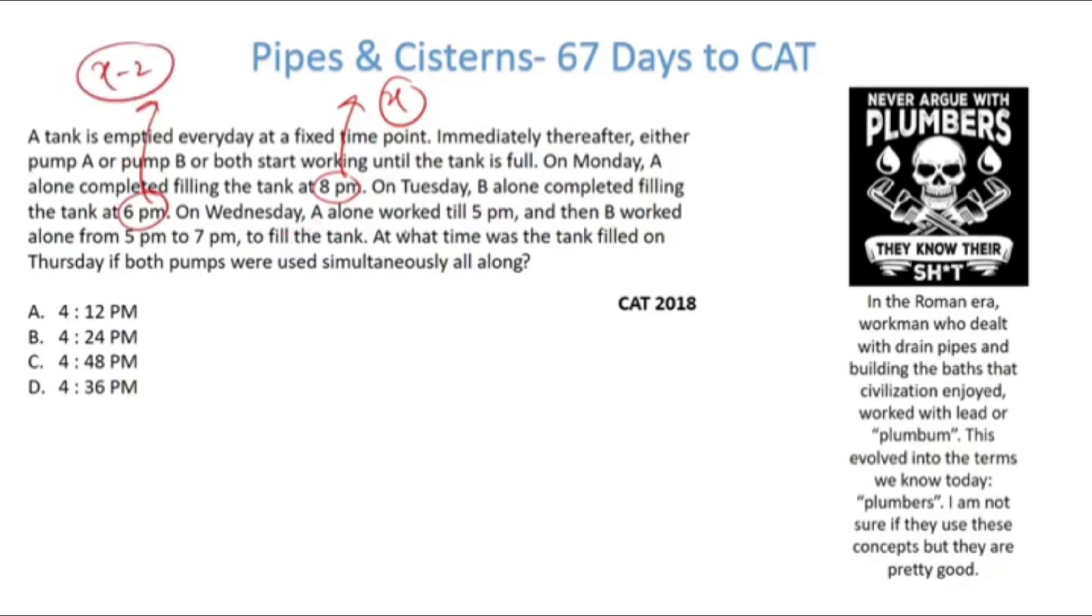On Wednesday A alone worked till 5pm and B worked from 5 to 7. Here total the time taken is x minus 1. Here it is 6pm, here it is 8pm - x minus 2, x - so therefore 7pm must be x minus 1. Now what is happening? A is working till 5pm, so A is working for x minus 3 hours, and then B is working for 2 hours.